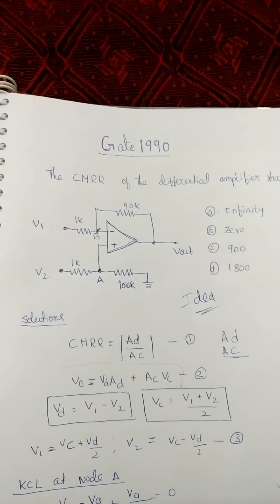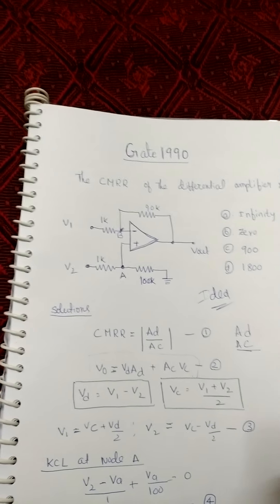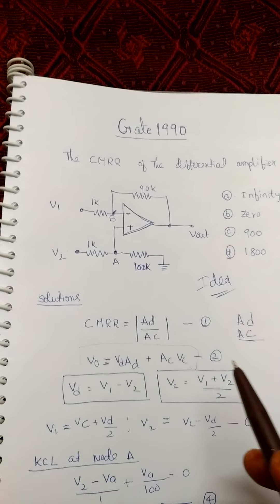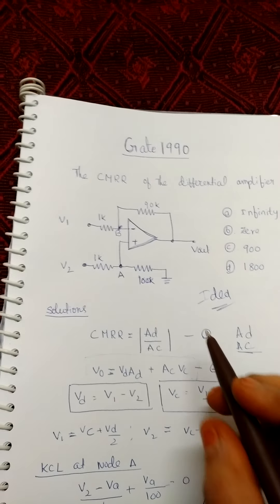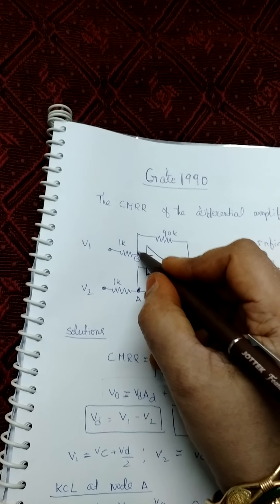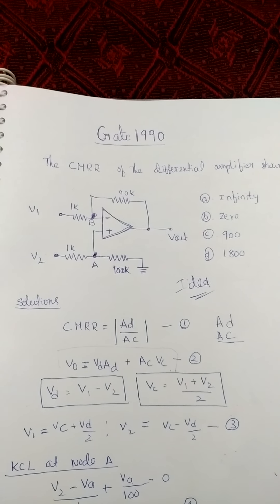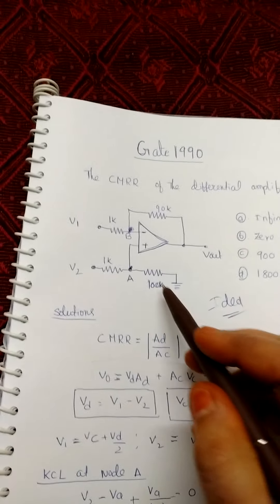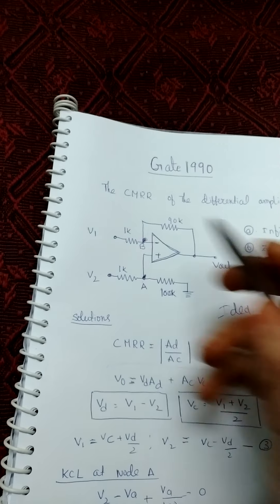An ideal operational amplifier has specific characteristics. The open-loop gain of the operational amplifier is infinity. Because of that, we have the virtual ground concept. So the voltage at node A is equal to the voltage at the other node — as covered in earlier videos, the potential at node A equals the potential at the non-inverting input.